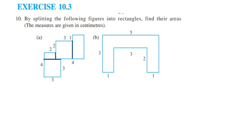Now you can see I've labeled the split sections as rectangle A, B, C, and D. We're going to find the area of all of A, B, C, D and then add them up. Now let's figure out what the measurements are.